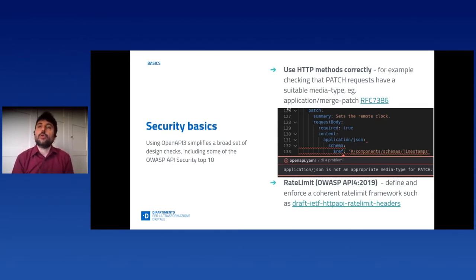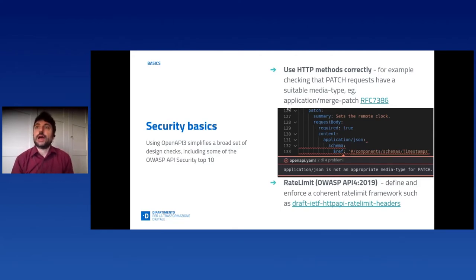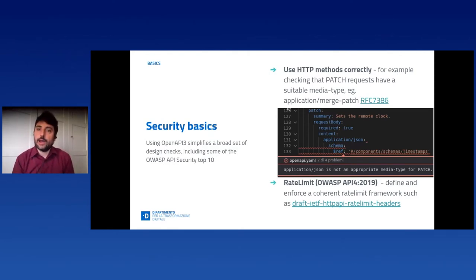Another OWASP API security top 10 item is ensuring that APIs are properly rate-limited, so that the infrastructure can manage high throughput and block when there are too many requests. Adopting the RateLimit header draft, just like the one we are working on inside the IETF, will ease the enforcement of this kind of policies.